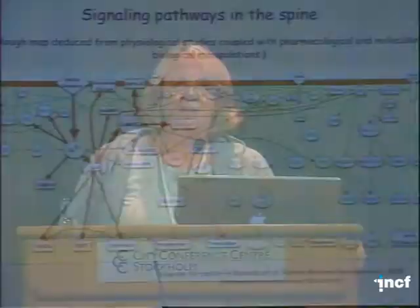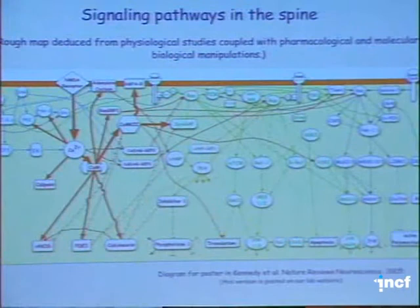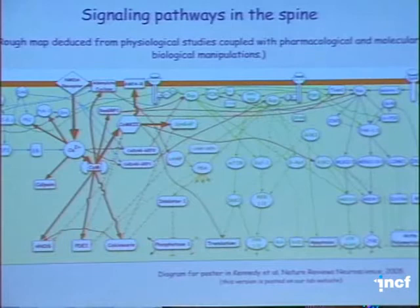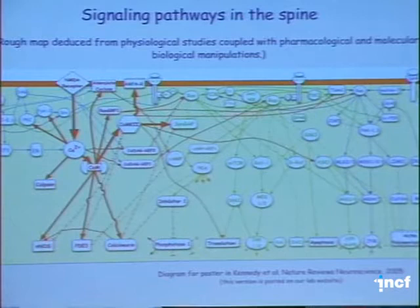This is a rough map — deduced from physiological studies coupled with pharmacological and molecular biology work over the last couple of decades — showing the various interactions among known biochemical pathways that can influence events within the synapse. Here's the NMDA receptor with the rise in calcium, and here are some early targets of calcium. One major target is calmodulin, a small molecule that in turn binds to and regulates a number of other known molecules in the spine.